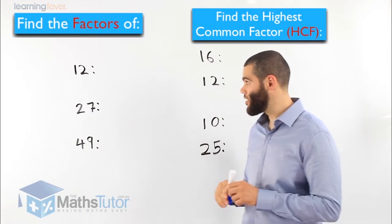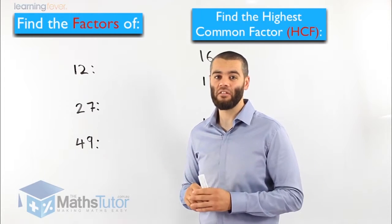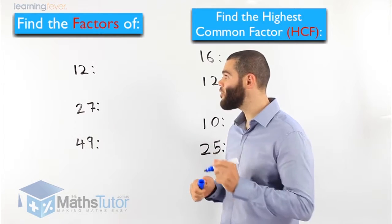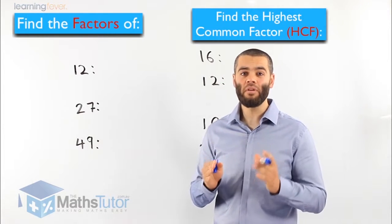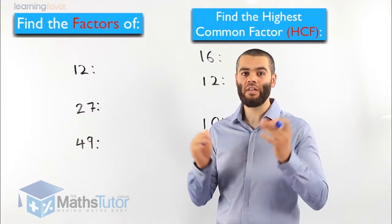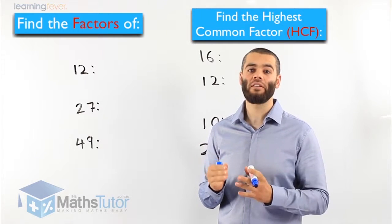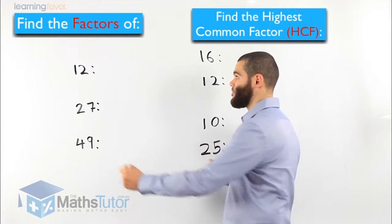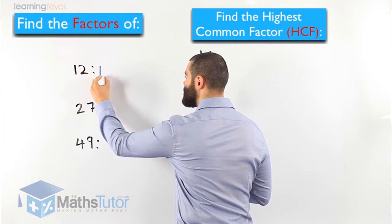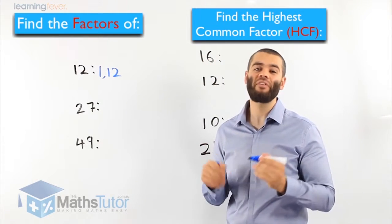In this case, we're asked to find the factors of 12, the factors of 27, and the factors of 49. Let's get started with the factors of 12. The factors of 12 are basically the numbers that multiply each other to get 12. What numbers multiply each other to get 12? We know that 1 times 12 is 12, so 1 and 12 are factors of 12.